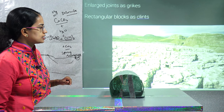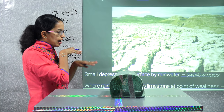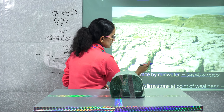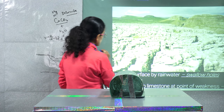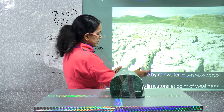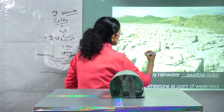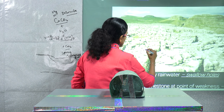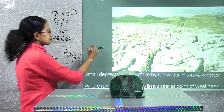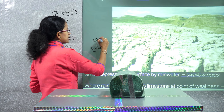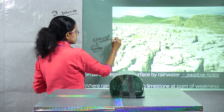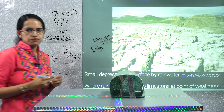Clints are basically rectangular blocks, as seen in the image. When water passes, joints are created, and these in-depth joints are known as grikes. The rectangular landmass that remains between the joints is known as a clint. Grikes are commonly seen as a result of chemical weathering.